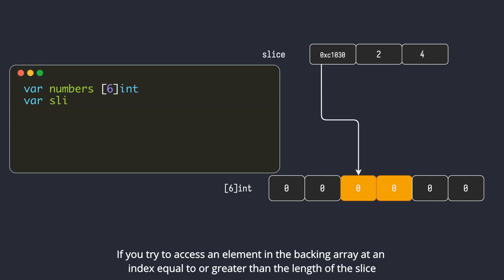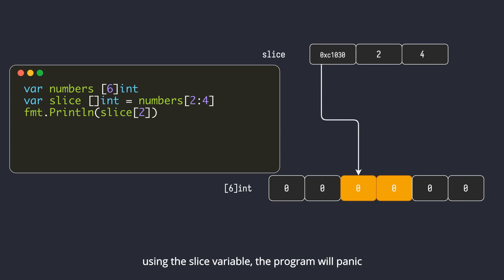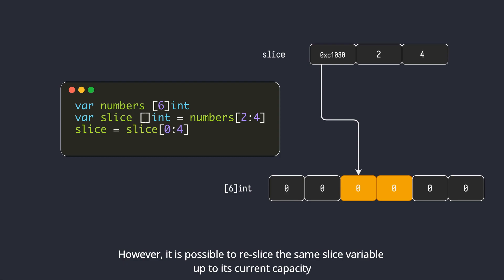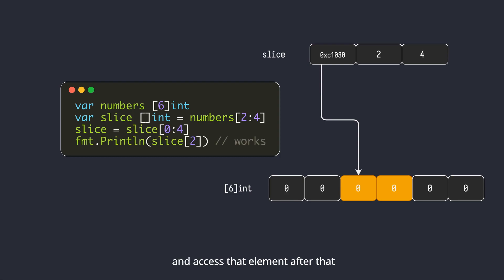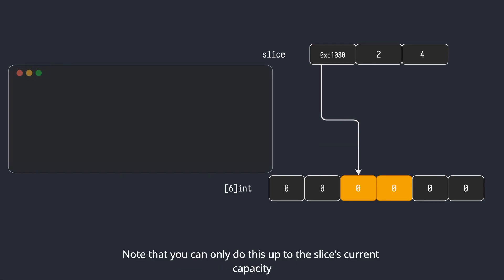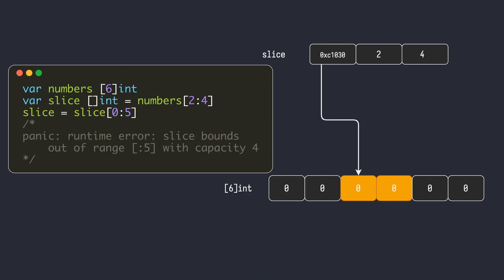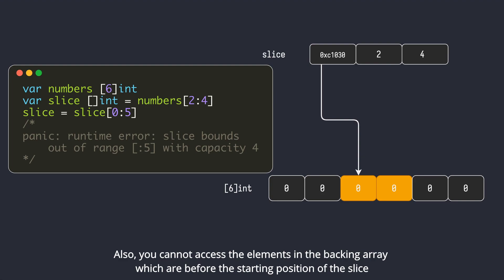If you try to access an element in the backing array at an index equal to or greater than the length of the slice using the slice variable, the program will panic. However, it is possible to re-slice the same slice variable up to its current capacity and access that element after that. Note that you can only do this up to the slice's current capacity — slicing beyond the current capacity will cause a panic. Also, you cannot access the elements in the backing array which are before the starting position of the slice.